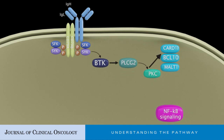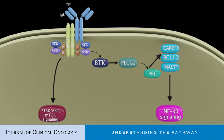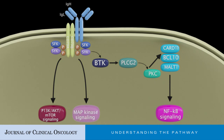NFKB, phosphatidylinositol-3-kinase (PI3K), protein kinase B (AKT), and MAP kinase pathways, which promote growth, proliferation, and cell survival.